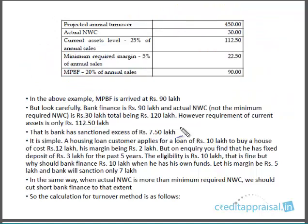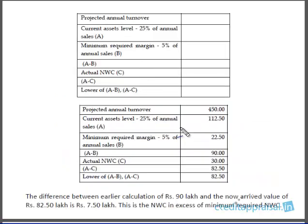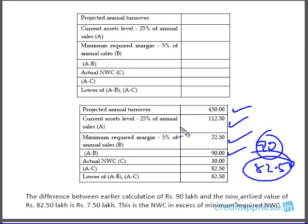So in the turnover method calculation: projected turnover, 25% gives minimum working capital (112.5), minimum NWC is 22.5 giving A minus B of 90 as bank finance. But also calculate A minus C, that is working capital requirement minus actual NWC (30), giving 82.5. Whichever is lower you sanction. The difference of 7.5 between 90 and 82.5 is the NWC in excess of the minimum required NWC.